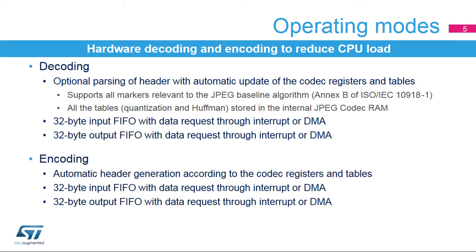The JPEG Codec has 2 operating modes for decoding and encoding. During decoding operations, the JPEG header can be automatically parsed. The Codec supports all the markers relevant to the JPEG baseline algorithm.